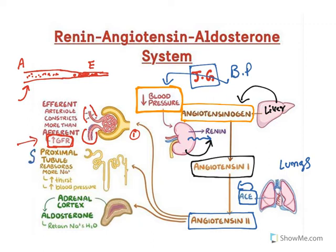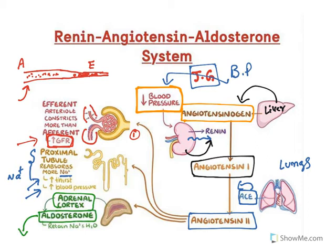The second effect is that from the proximal tubule, reabsorption of sodium is increased. Increased sodium reabsorption into the body enhances thirst, enhances fluid accumulation and blood pressure. The third prominent effect is that angiotensin II stimulates the adrenal cortex to release a mineralocorticoid known as aldosterone, which retains sodium and water in the body. These are the three prominent effects: increasing glomerular filtration rate, increasing sodium reabsorption, and releasing aldosterone to further increase sodium reabsorption.